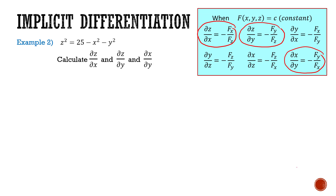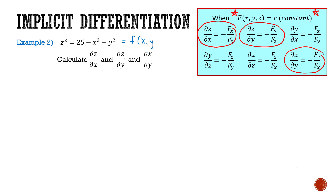Before I can begin implicit differentiation, I need to set this up so that I have f(x, y, z) equal to a constant. Here I have z squared equal to a function with x and y, so that's not going to work — I don't have a constant on either side. So f(x, y, z) is not equal to a constant, since z, x, and y are all changing.